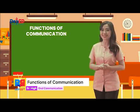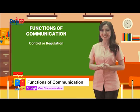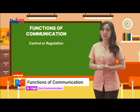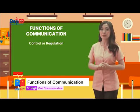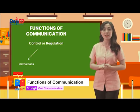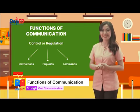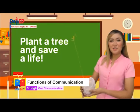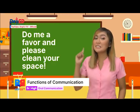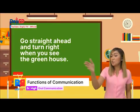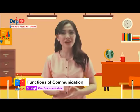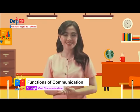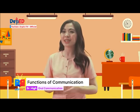Let's start with the first one: control and regulation. We use this function when we aim to regulate or control the behavior of a person or group of people. These could also be delivered in forms of instructions, requests, or commands. Some example statements for this would be: 'Plant a tree and save a life.' 'Do me a favor and please clean your space.' 'Go straight ahead and turn right when you see the greenhouse.' Have you ever had a conversation where you used this function of communication? I'm pretty sure you have.